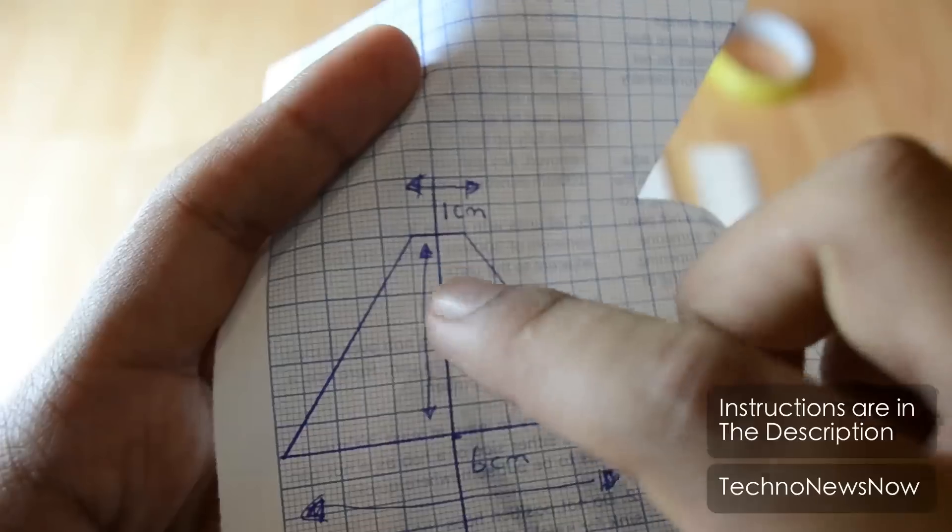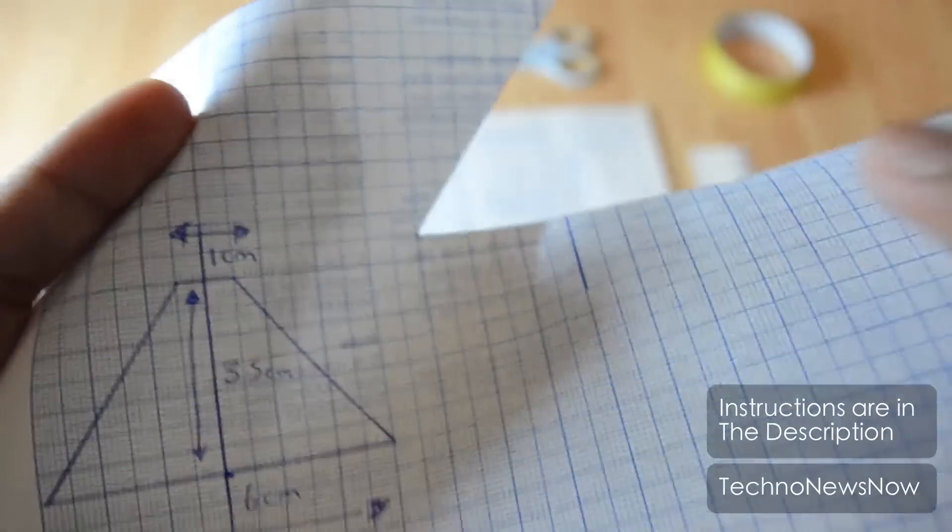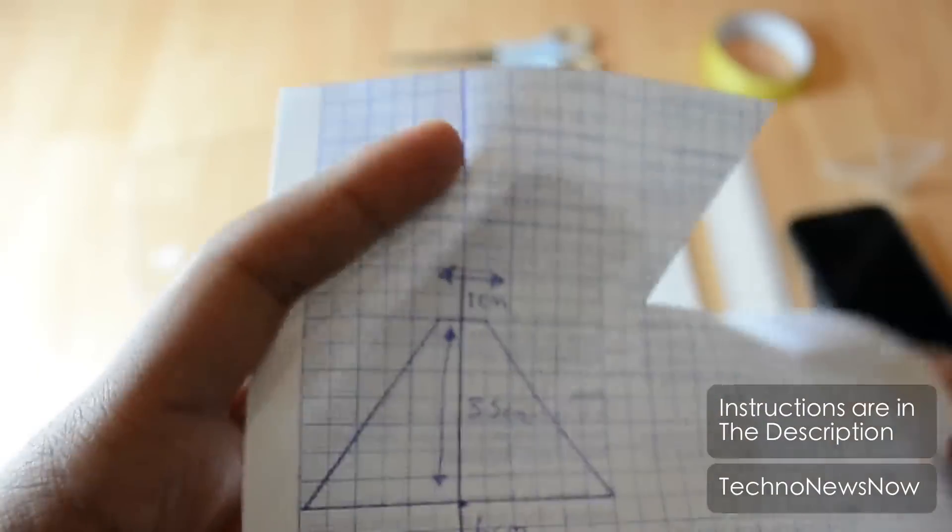So you want to cut out four of these, so go ahead and draw four of them on your graph paper and cut them out, and then simply stick that on your clear CD case.